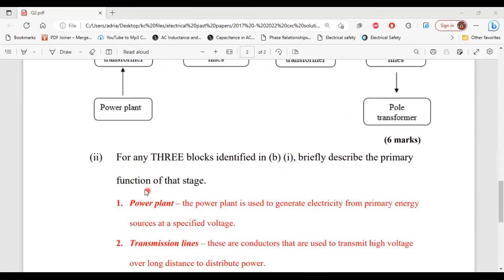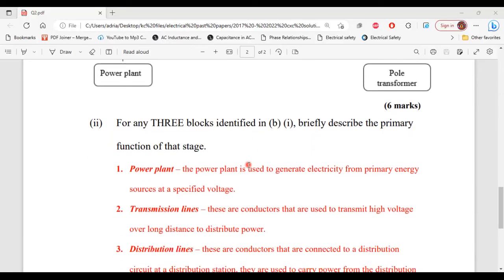it says for any three blocks identified in part one of B, briefly describe the primary function of that stage. For the first stage, the power plant: the power plant is used to generate electricity from primary energy sources at a specified voltage.